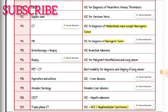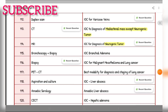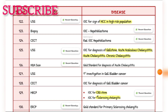Investigation of choice for liver abscess — aspiration and culture. Investigation of choice for amoebic liver abscess — amoebic serology. Investigation of choice for hepatic adenoma — CECT. Investigation of choice for hepatocellular carcinoma — triple-phase CT. Investigation of choice for HCC in high-risk population — USG. Investigation of choice for hepatoblastoma — biopsy.